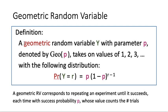So what is it? A geometric random variable Y with parameter p — usually we denote this by GEO with parameter p — can take on values of 1, 2, 3, and so on and so forth. It has the following distribution: the chance that Y equals r is equal to p times (1 minus p) to the power r minus 1.